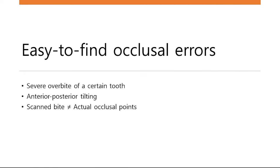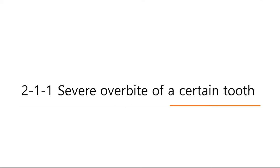These are easy-to-find occlusal errors. The first is a severe overbite of certain teeth. The second is anterior-posterior tilting. The third is when a scanned bite differs from the actual occlusal points. Let's show the case of a severe overbite of a certain tooth.